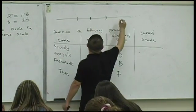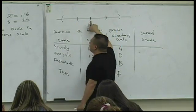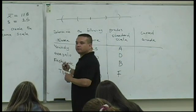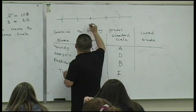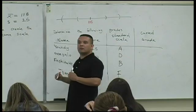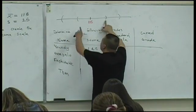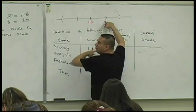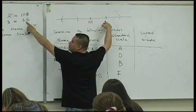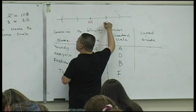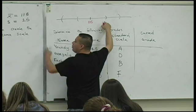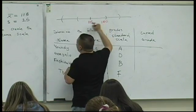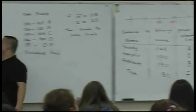Now, let's look at the curve scale. How do you guys generate the curve scale? What's in the center? What's the average test score? 115. How do you know? What are these two boundary values? You add what to 115 to get this value? 115 plus 25. What is that? 115 plus 25 is 140. 115 minus 25 is 90.